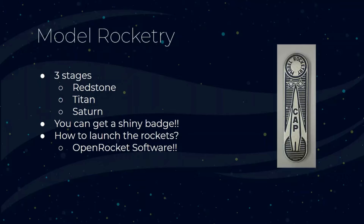The program has three stages: Redstone, Titan, and Saturn. What happens once you complete these three stages? You get a shiny little badge that you can pin to your blues uniform. How fun is that?